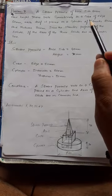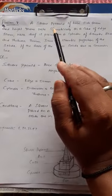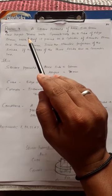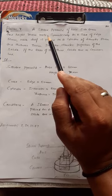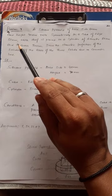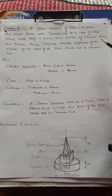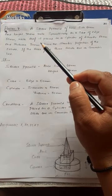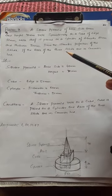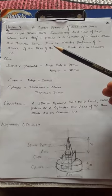Our next lecture video is to solve problem number seven: a square pyramid of base side 40 mm and height 70 mm rests symmetrically on a cube of edge 50 mm, which itself is placed on a cylinder of diameter 80 mm and thickness 30 mm. Draw the isometric projections of the solids if the axis of the three solids are in a common line.